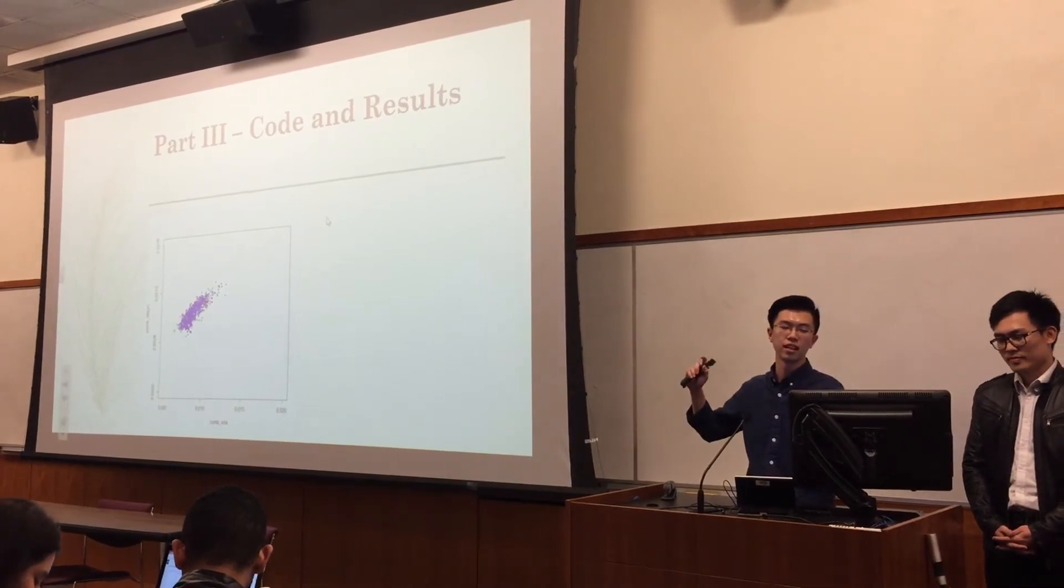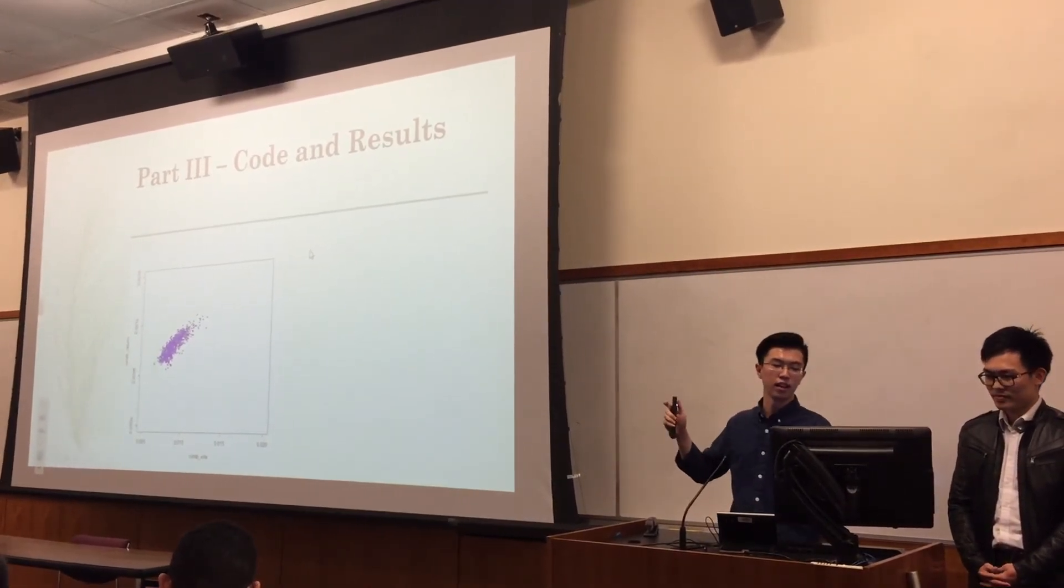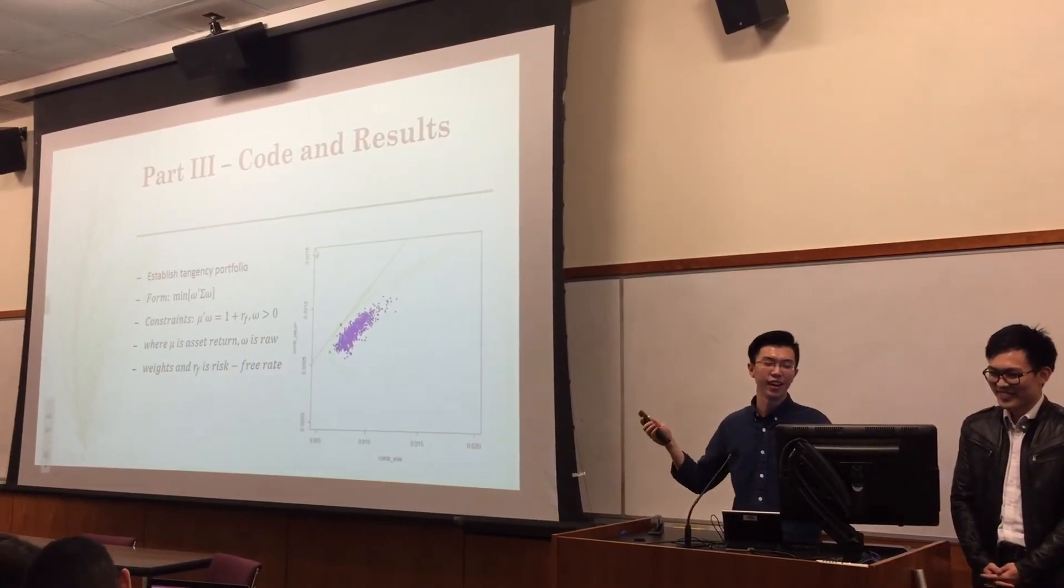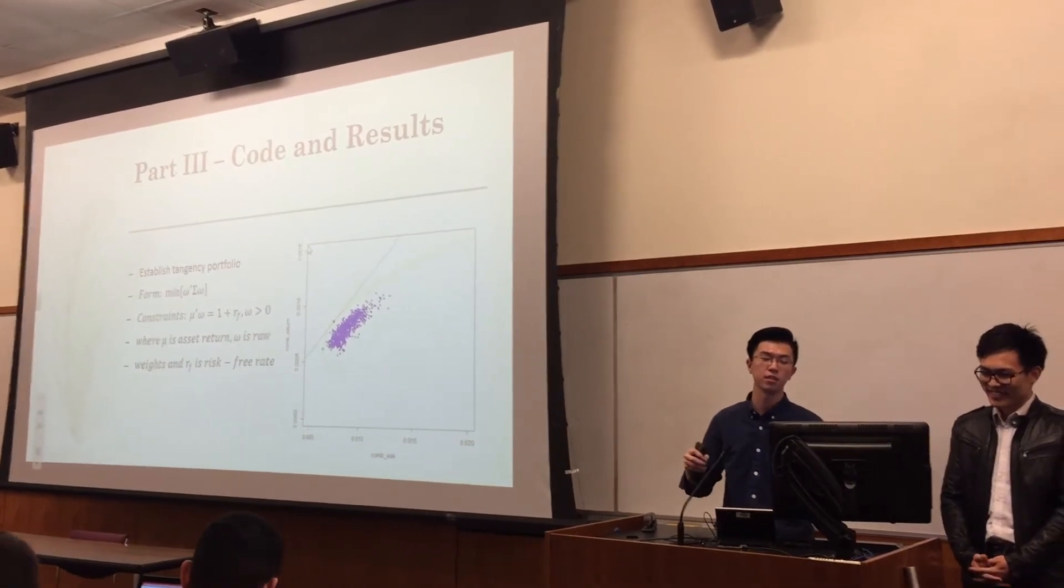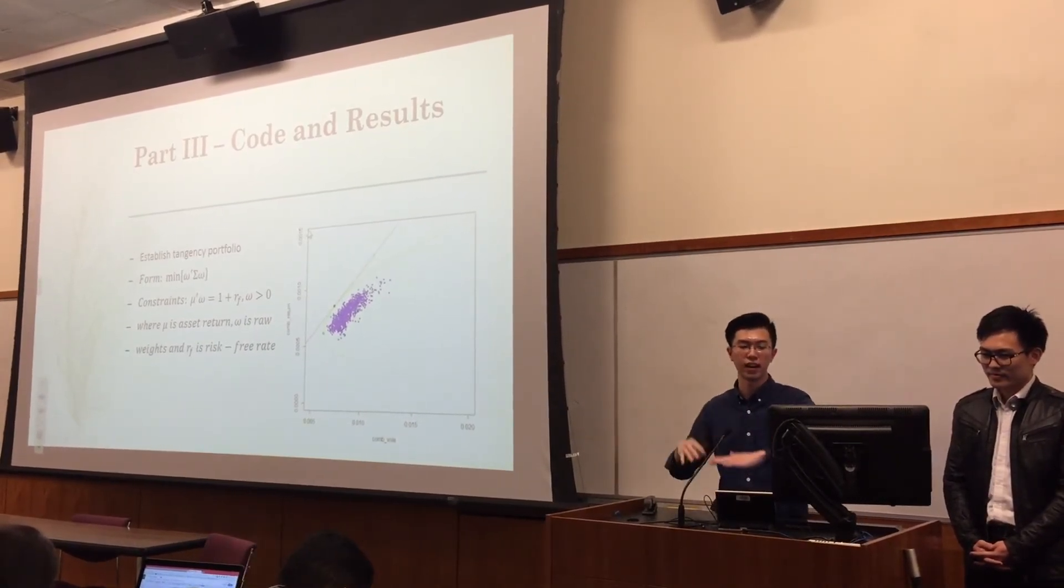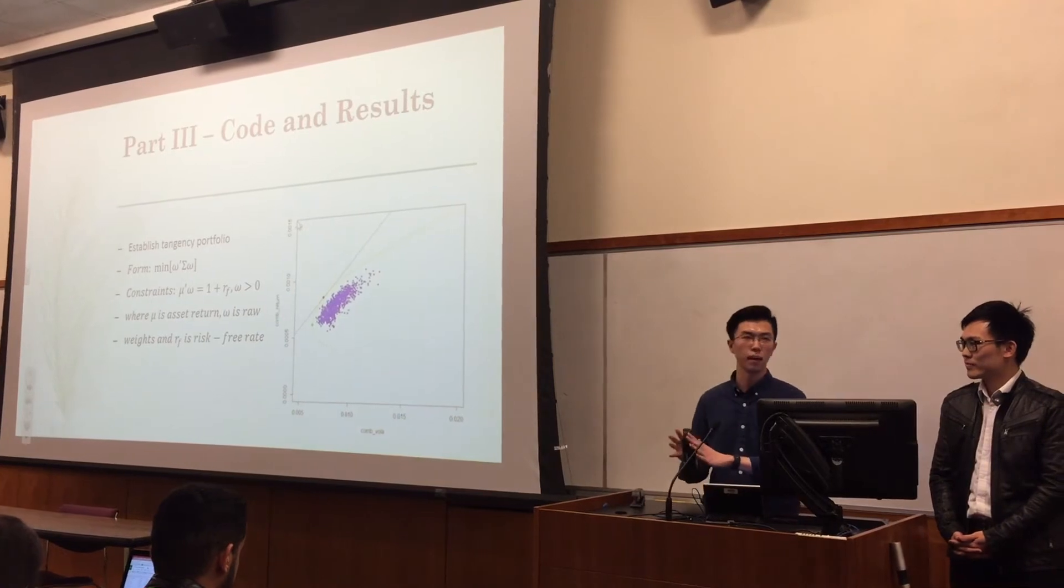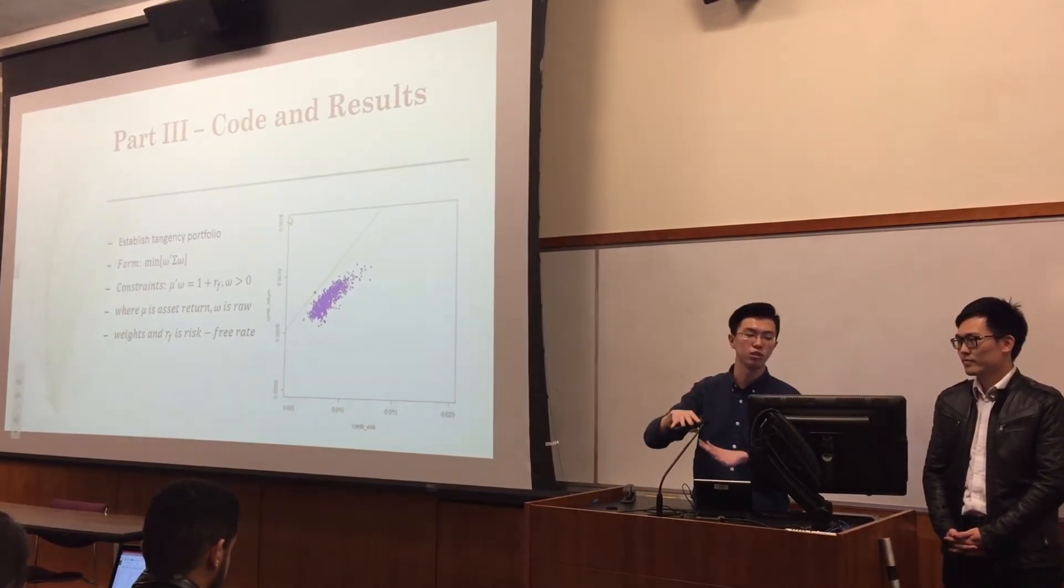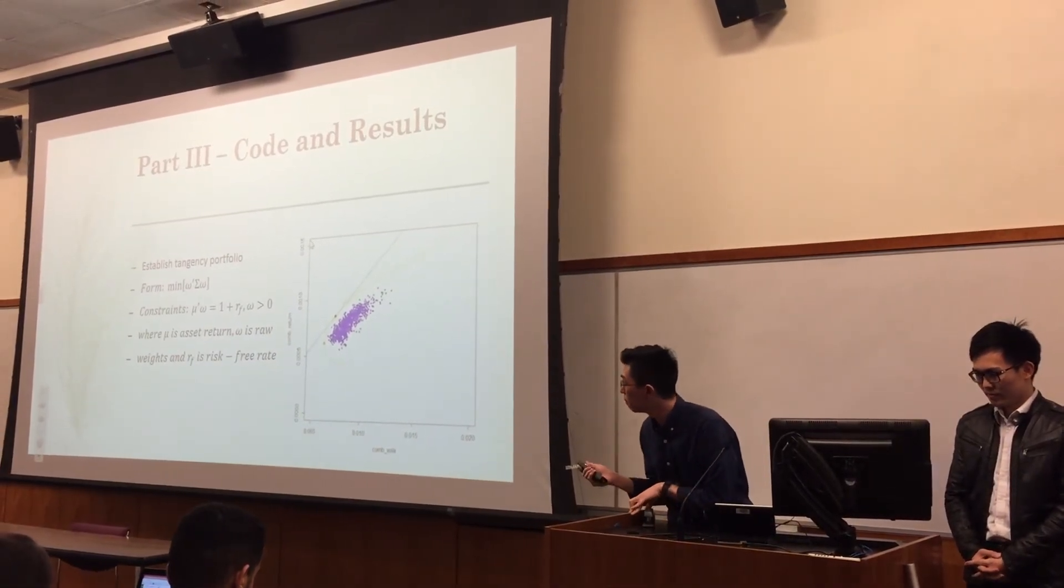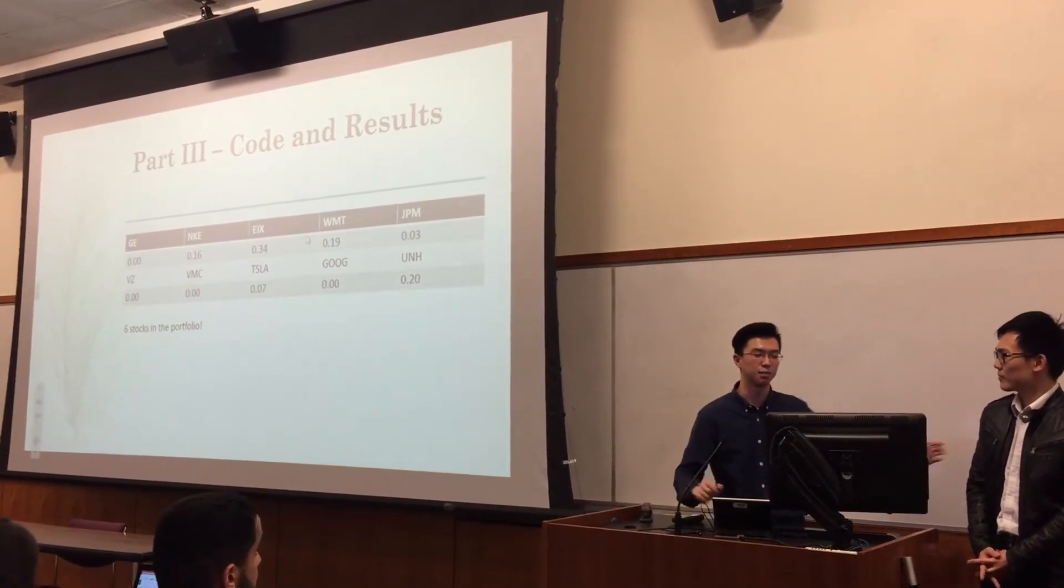We got the efficient frontier and also plot the minimum variance portfolio on the graph, and it has the minimum variance as expected. And tangency portfolio is the same thing. You know, tangency portfolio is your return minus risk free rate divided by the volatility. So this Sharp ratio, you maximize it. You make the upper part equals one and the denominator minimum.